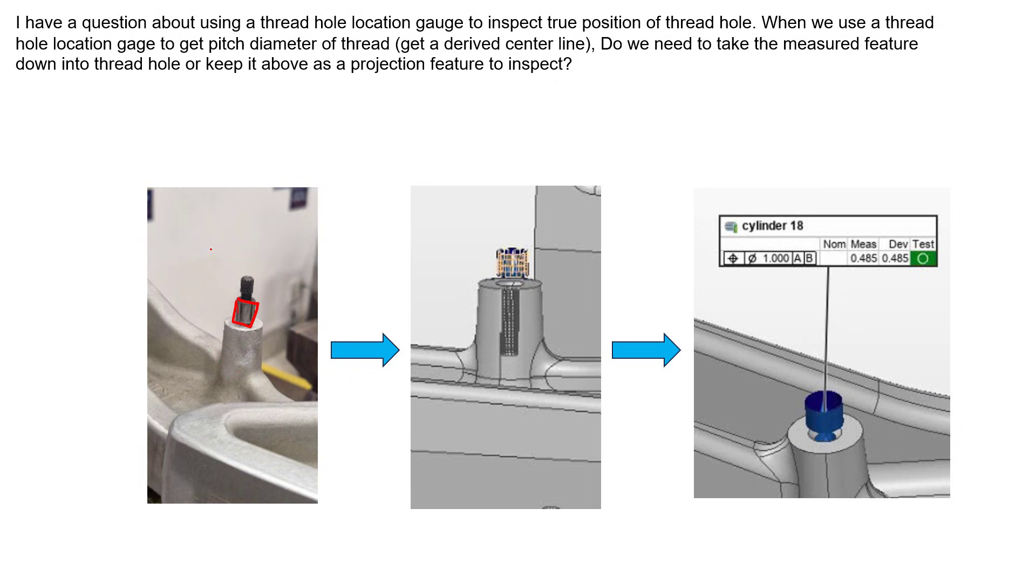You thread that in there and there's this little cylinder that sits above that surface. You would come in with a CMM or inspection equipment and measure where that cylinder is at. You're not actually measuring the threads themselves, but rather this tool that is attached to the threads that you threaded into the hole. The ASME Y14.5 standard says the default axis you need to measure when checking the location of a threaded feature is the axis of the pitch cylinder diameter.